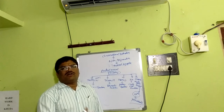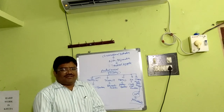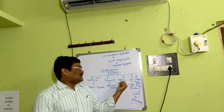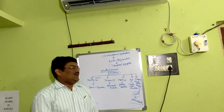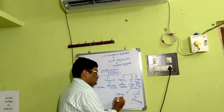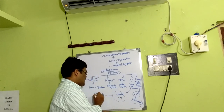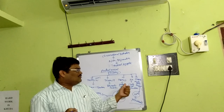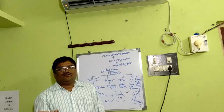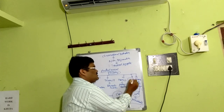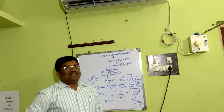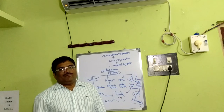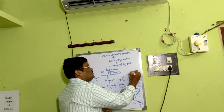Patau syndrome (trisomy 13): similar concept — addition of an extra chromosome to the 13th pair; children may die in early childhood. Cri-du-chat syndrome is called 5p minus syndrome — a small fragment of the short arm of chromosome 5 is deleted. This leads to a cat-like cry due to abnormalities in the larynx and nervous system. Chronic myelogenous leukemia involves reciprocal translocation.